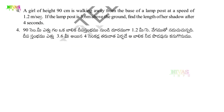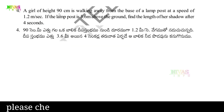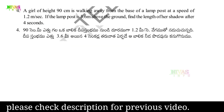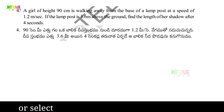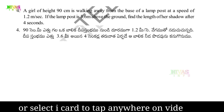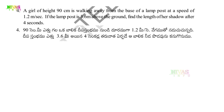Question Number 4. A girl of height 90 cm is walking away from the base of a lamp post at a speed of 1.2 m per second. If the lamp post is 3.6 m above the ground, find the length of her shadow after 4 seconds.